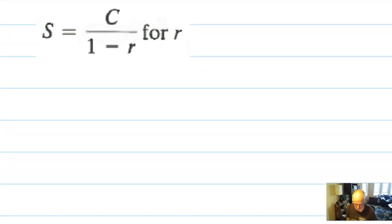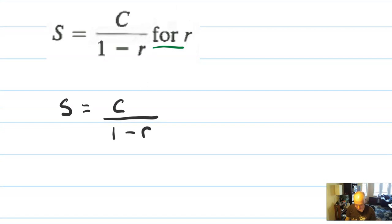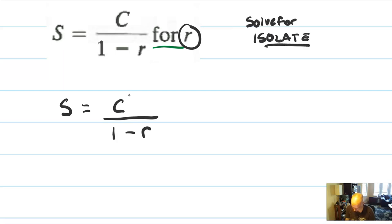You're not going to see it on this problem — this is just an example. We might see a problem like this, where we want to solve s equals c over (1 minus r) for the variable r. Your first move will be to go ahead and rewrite it. Now we have three letters here. We want to solve for the letter that's specified — you can solve for any of these letters. Solve for, by the way, means isolate on one side. So I want to isolate r.